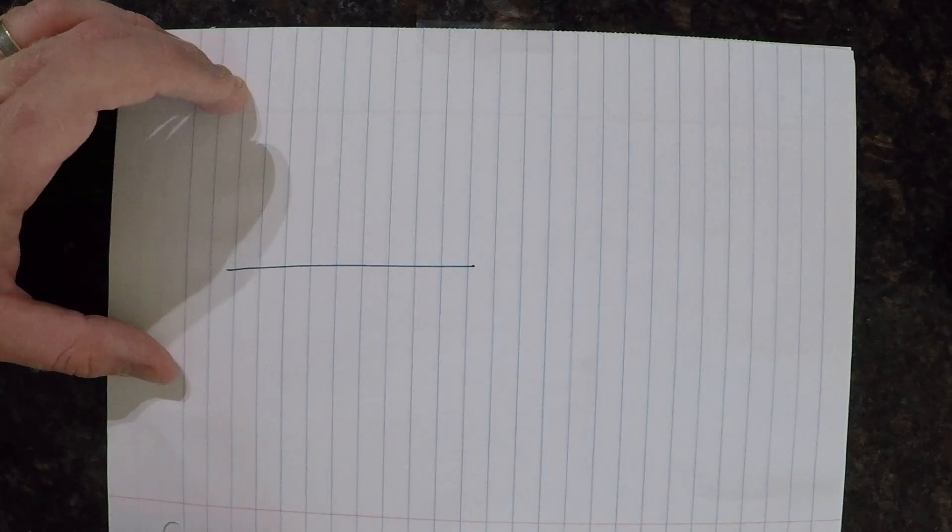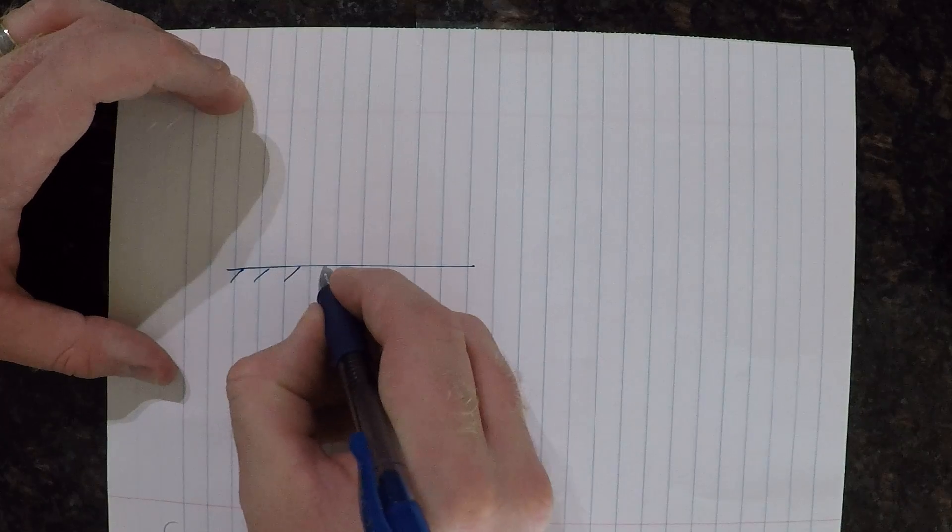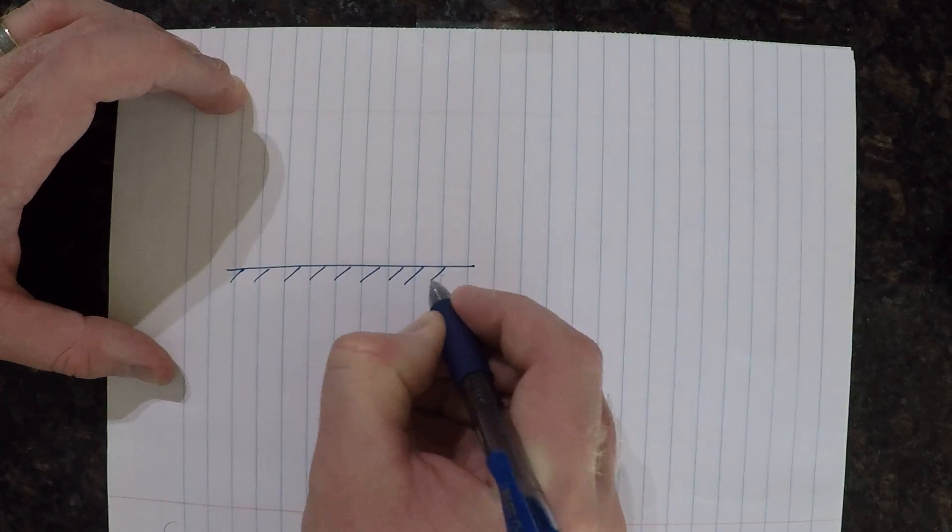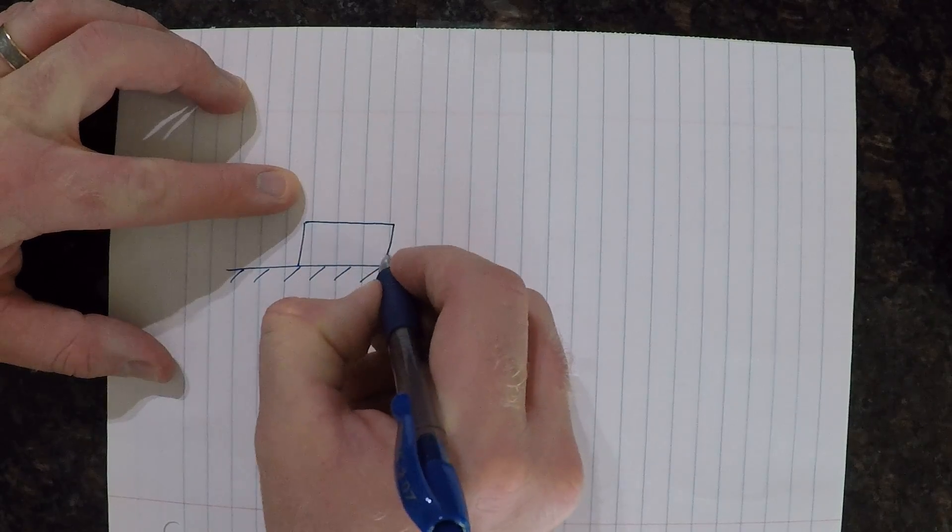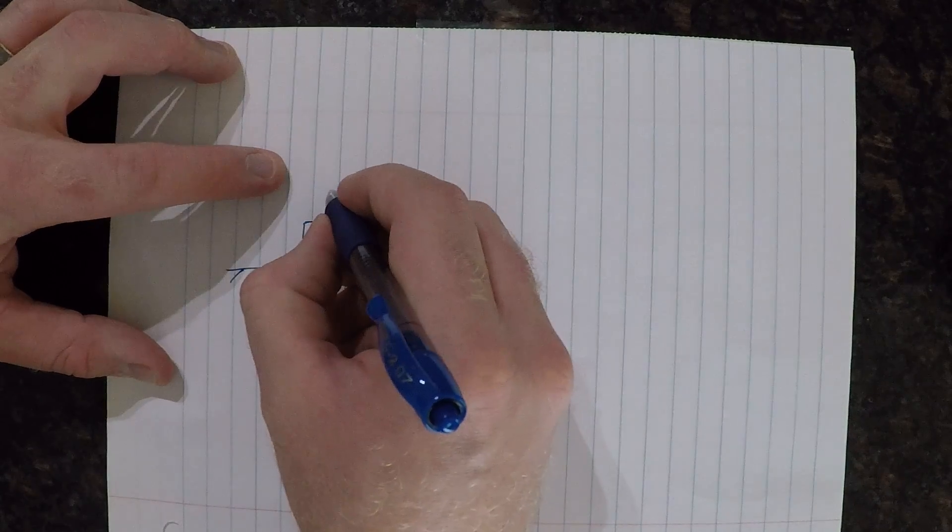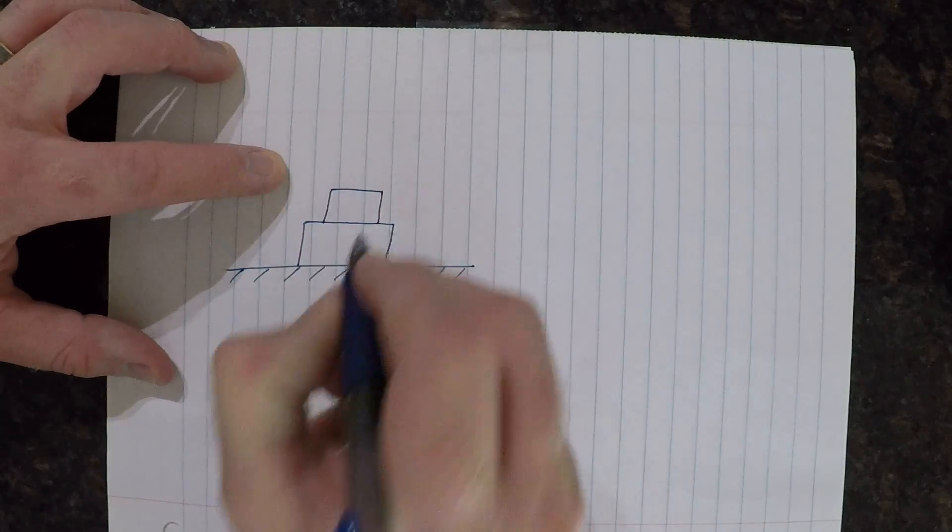So I'm going to draw a ground here or a table top, doesn't really matter. And we'll put an object here. We'll make it a nice big object like that. And then I'll place a smaller object on top.